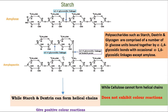These helical chains give positive color reactions. Dextrin, glycogen, and starch also form helical chains and give the positive color reaction, while cellulose cannot form helical chains and does not exhibit a color reaction.